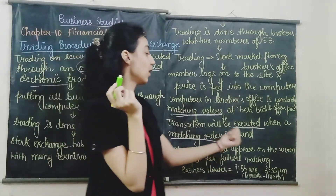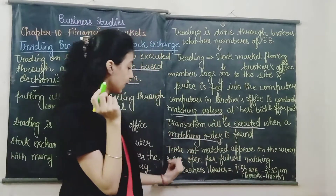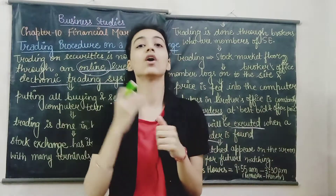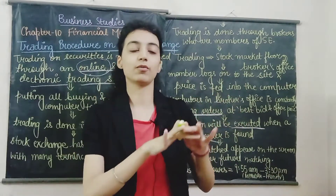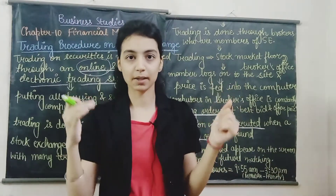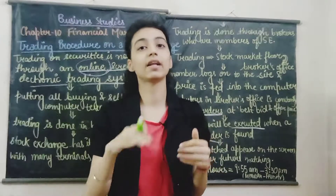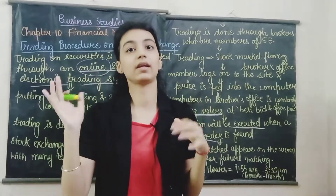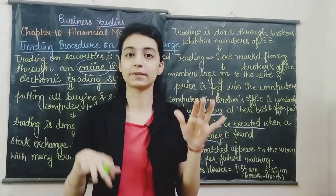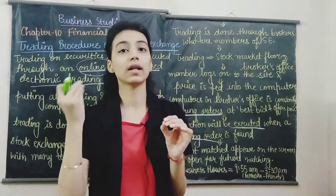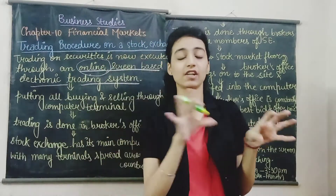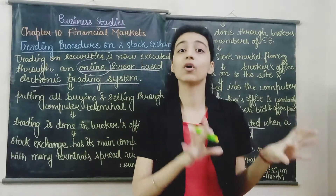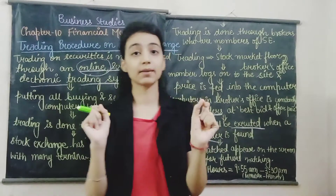Orders that are not matched appear on the screen and are opened for future matching. If a match is not made immediately, it will be visible on the screen and available for future matching, because prices are variable. If the match is not made, it will show on screen for future reference when business conditions change.